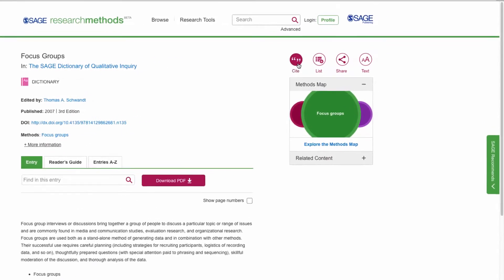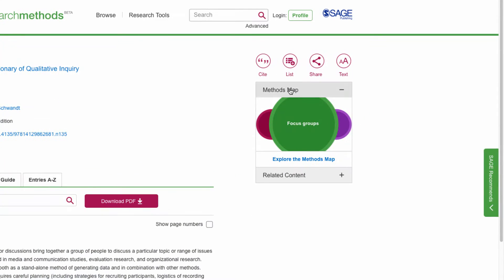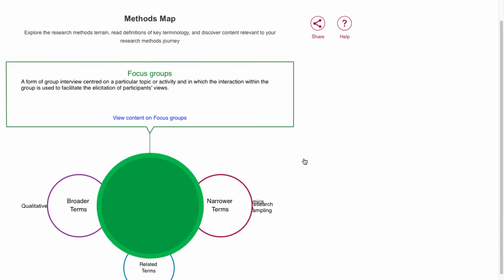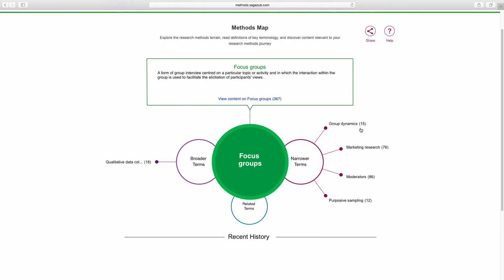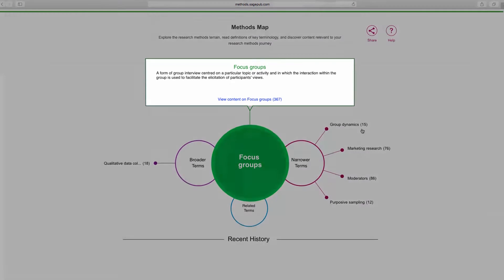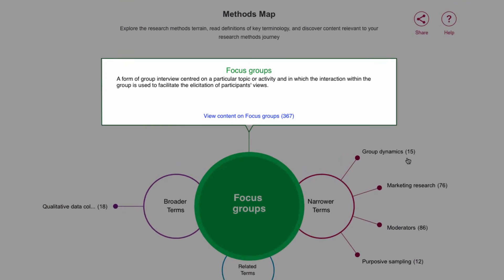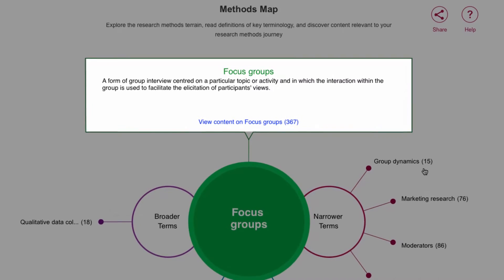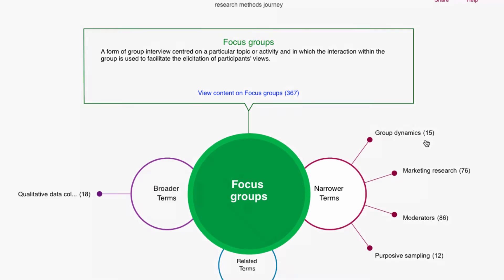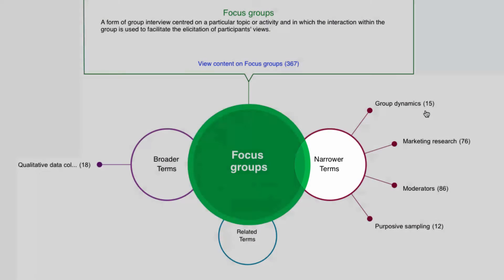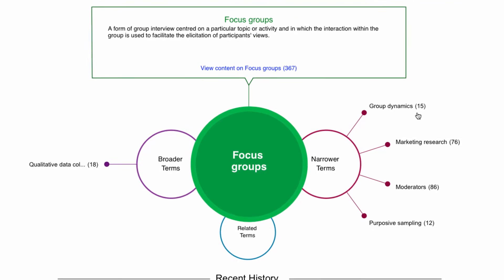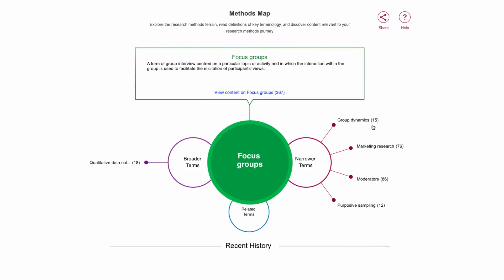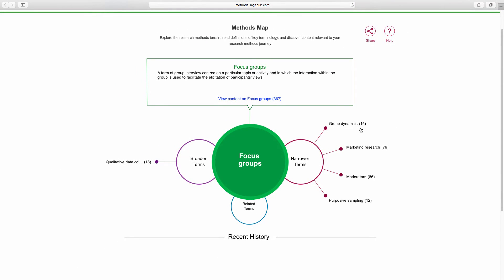If you're not quite sure which method you're looking for, the Methods Map can help you browse terms and content. The Methods Map is a visual representation of how methods, terms, and concepts are related to each other. You'll find a short definition of the term at the top with a link to relevant content. Plus, you can view narrower terms to the right and broader terms to the left, and see related terms by clicking on the bubble below.